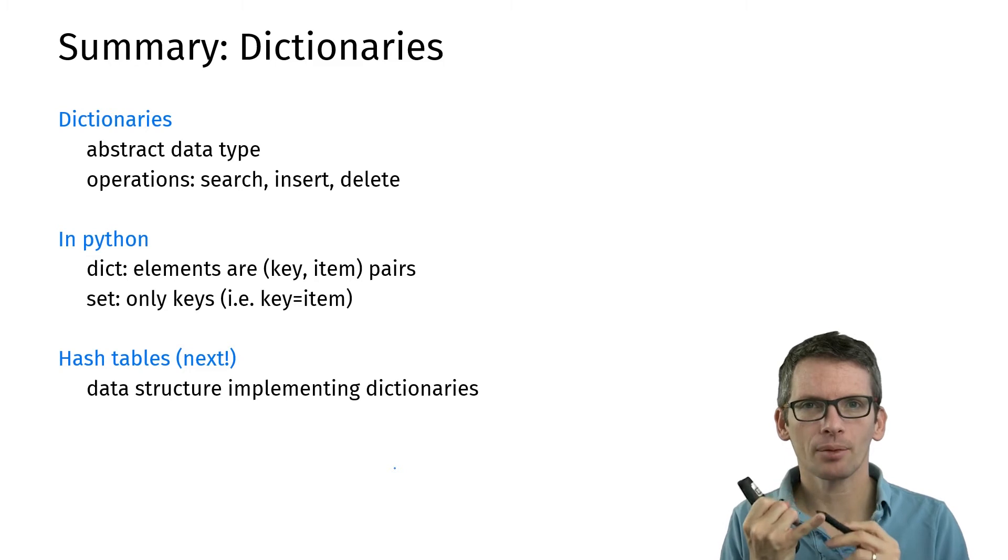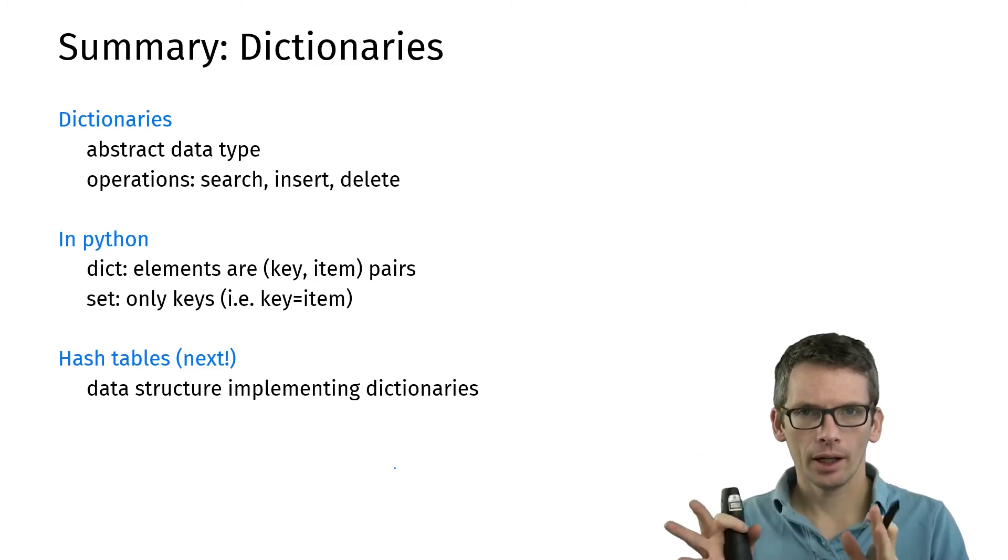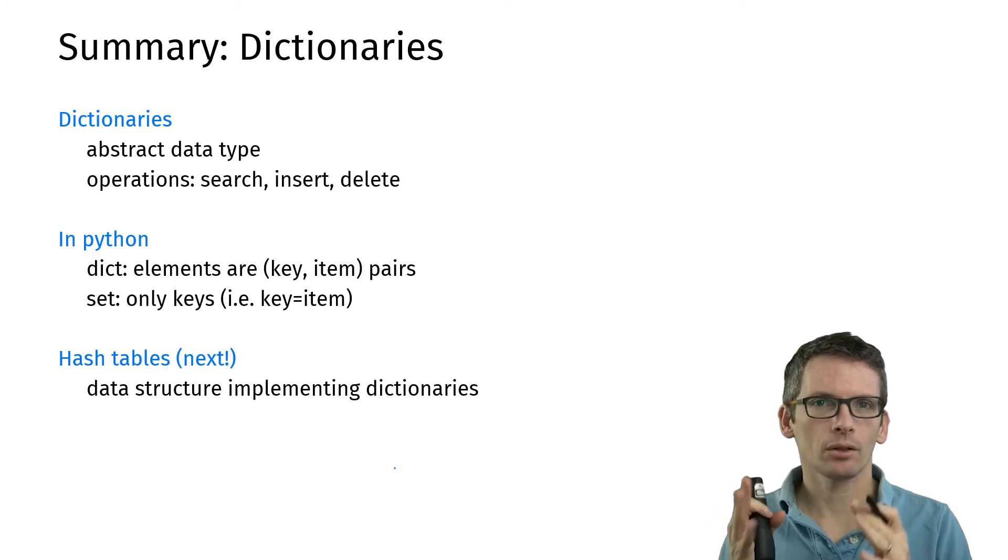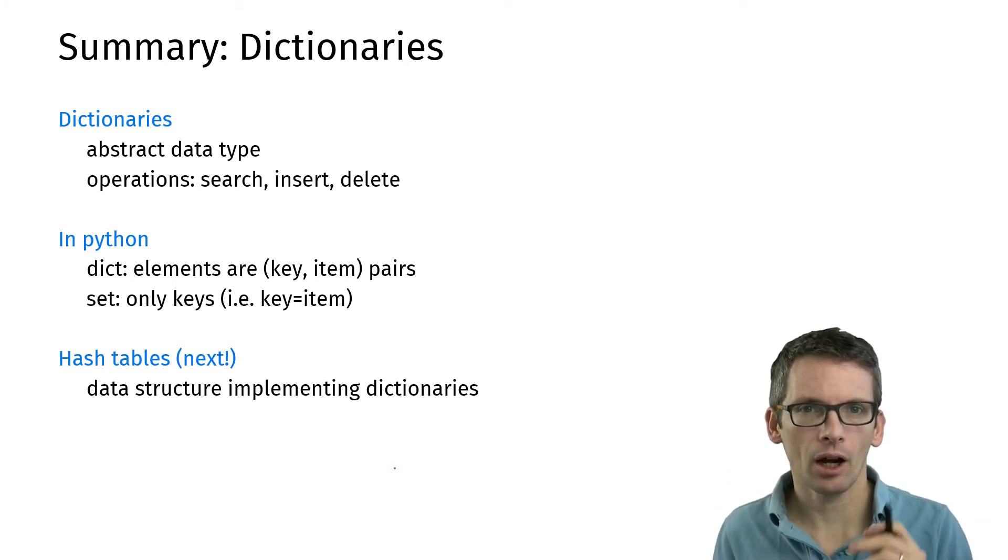So what have we seen so far? We're looking at abstract data type dictionaries. In those, you can search, insert, and delete. In Python, they are called dict or set if you only have the keys. Let's look at how they're implemented using hash tables.